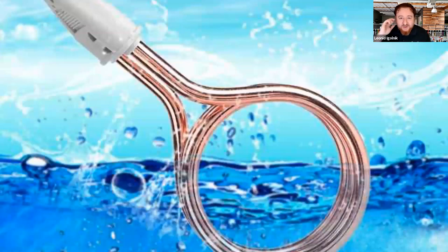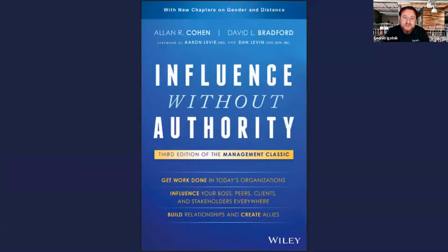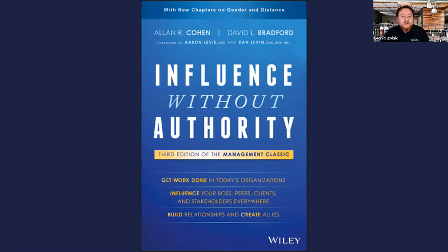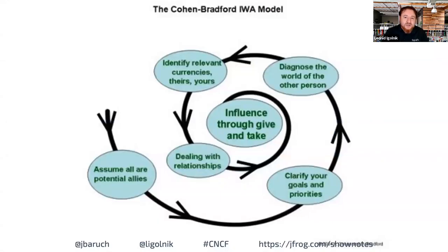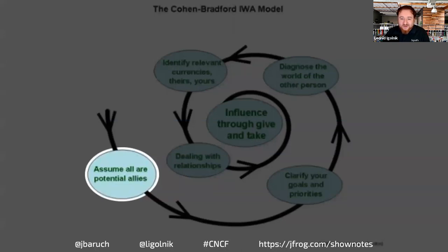That brings us to the book we wanted to highlight today, which will guide the rest of our discussion. One of our favorite models for the type of influence that Alex needs — getting a transformation going not from a position of authority, but as a member of the organization — is a book called Influence Without Authority. The book walks you through a six-step model that we will decompose together step by step. Let's begin with step one, the most important and typically not very intuitive step: assume that everybody in the organization can be your potential ally.